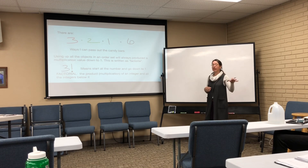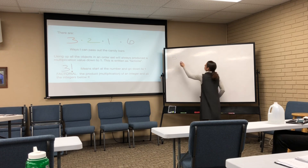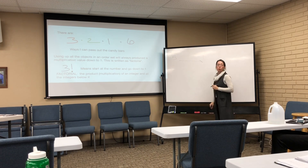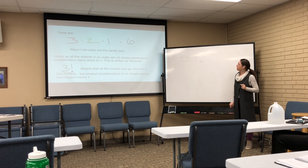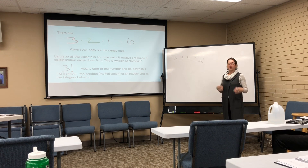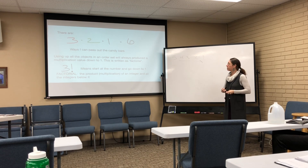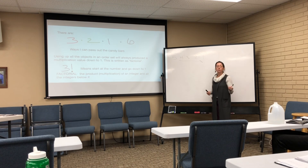Factorial is from algebra one. It simply means we start at that number and multiply down to one. So five factorial is 5 × 4 × 3 × 2 × 1. Your calculator has a factorial button. So while we'll often use the blanks method to figure something out, if we choose to use factorial we can use that button on our calculator.